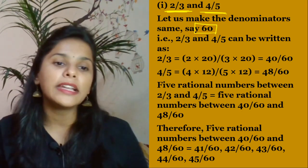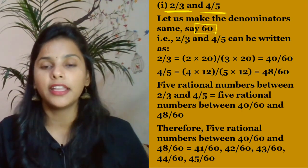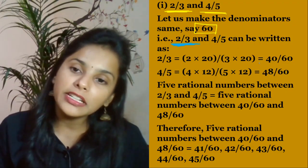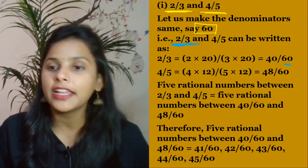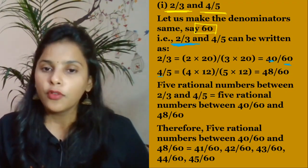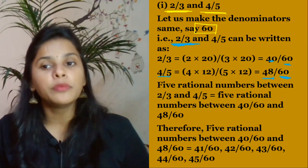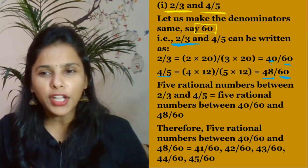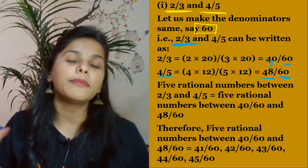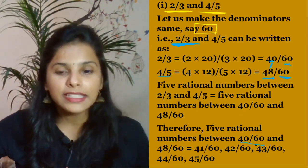First check whether the denominators are the same. They are not, so make them equal. We choose denominator 60. So 2/3 becomes 40/60, and 4/5 becomes 48/60. Now write 5 rational numbers between 40/60 and 48/60.